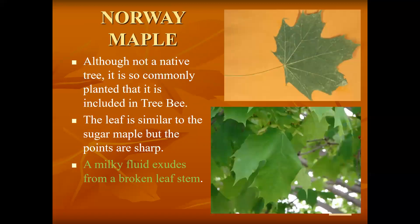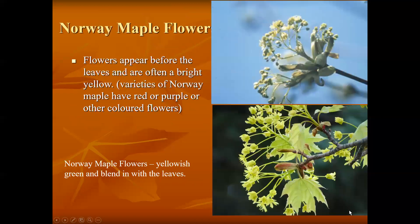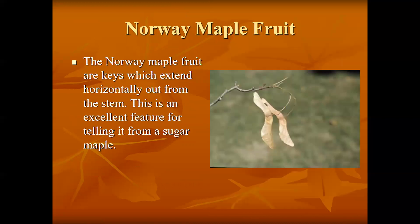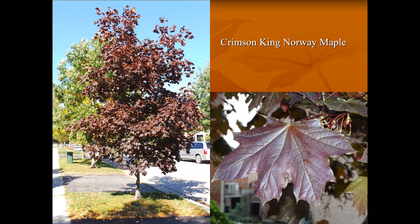Interesting facts: Norway maple is not a native species but is included here because there are so many Norway maples in Ontario. If you break the stem of a Norway maple, a milky white fluid will be seen. Norway maple flowers are yellowish-green and come out before the leaves. A unique feature of the Norway maple fruit is that it looks like a person doing the splits, which is an identifiable feature.